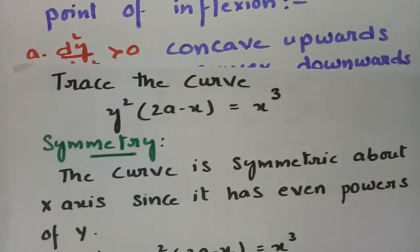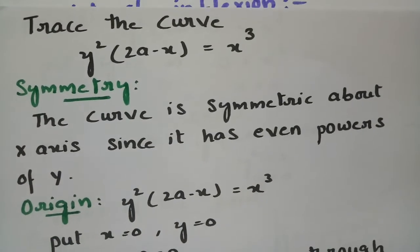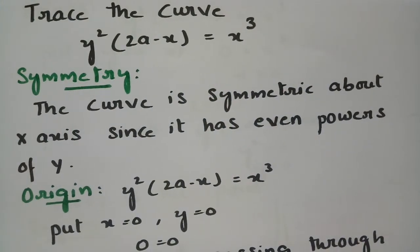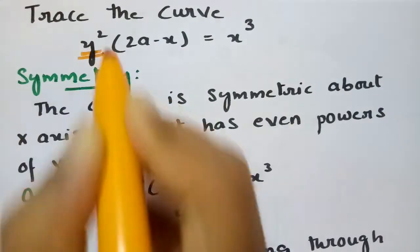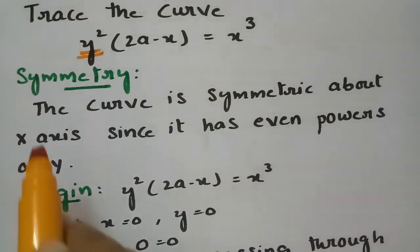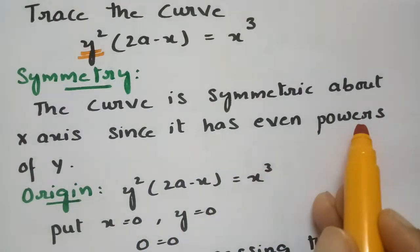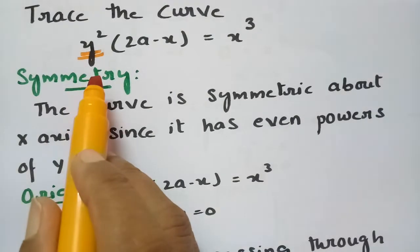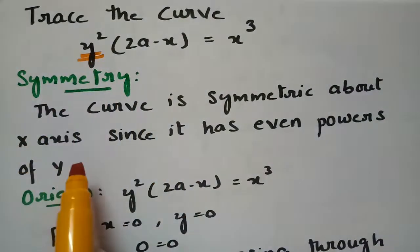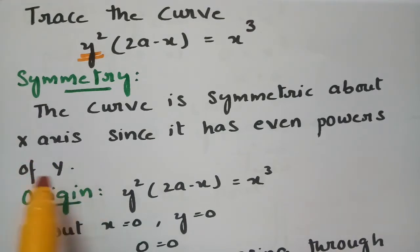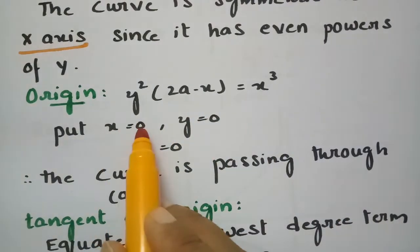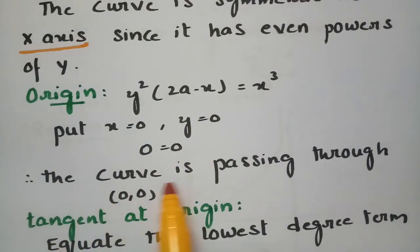Using all these steps I am going to trace the curve y² (2a − x) = x³. First, symmetry: it is clear that we have even powers of y, so the curve is symmetric about the x-axis.